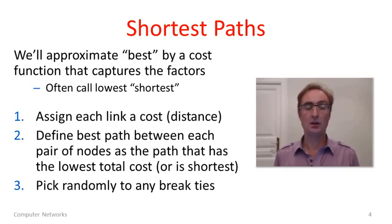And what we will do is make a cost function, so that we'll be able to compute the cost of different paths. And we'll choose the path which has the lowest total cost to be the best path. By assigning the cost in different ways, we'll be able to capture some of these different factors. Now, often we'll call the lowest cost path the shortest path. This is what you would get if you assigned the cost function to be the distance.